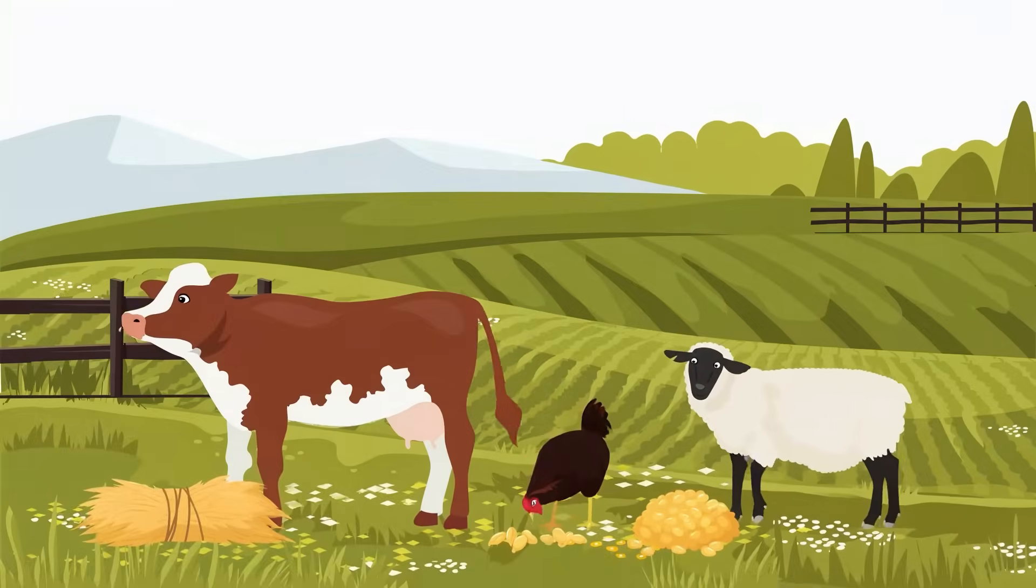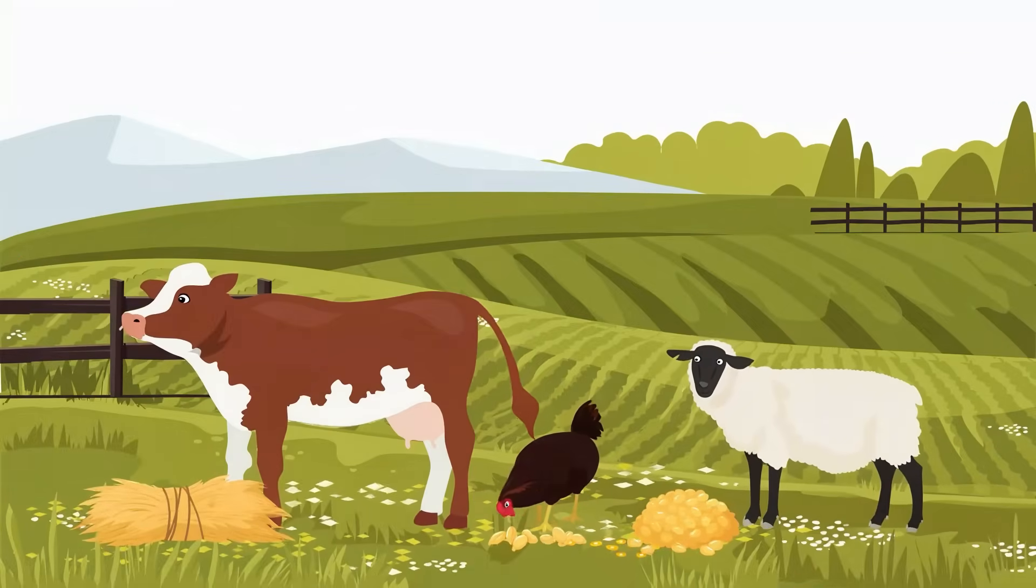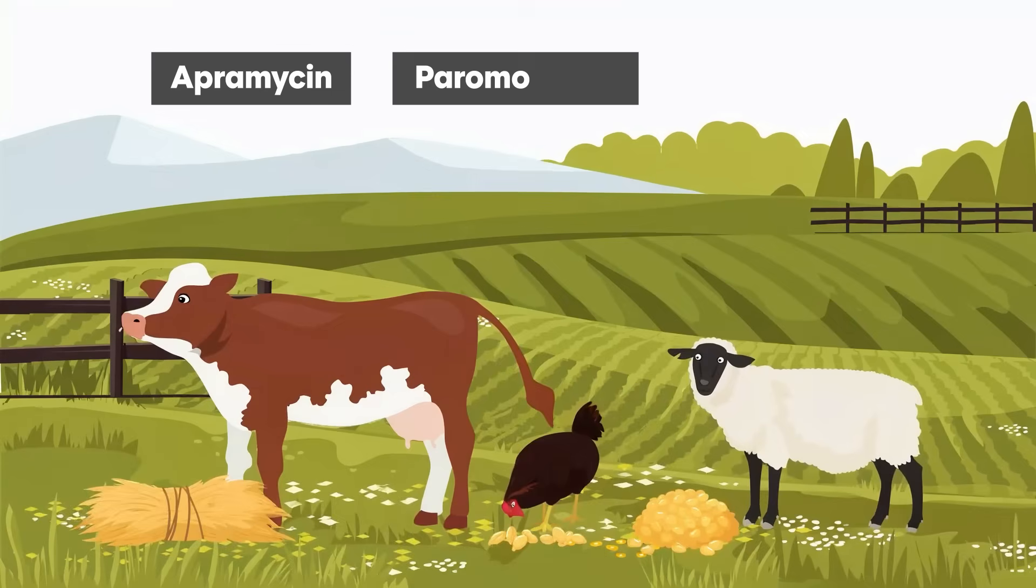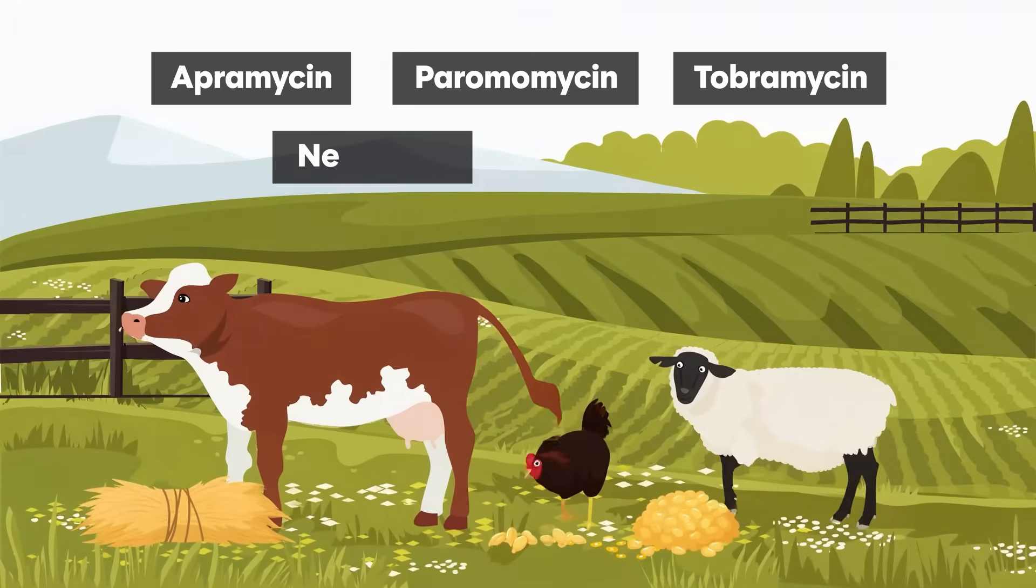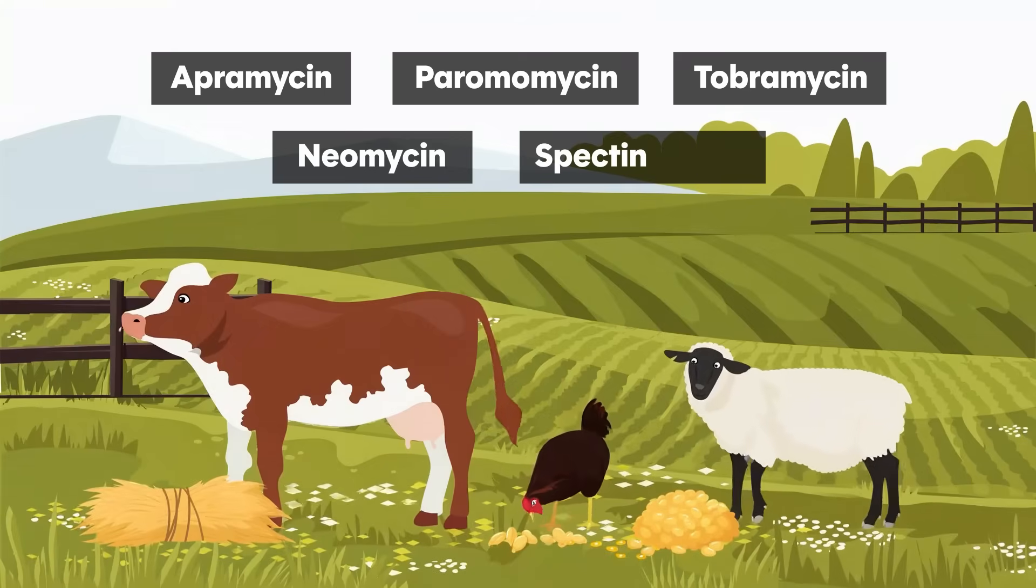The JRC team focused on five antibiotics commonly used in livestock: apramycin, peromamycin, tobramycin, neomycin, and spectinomycin.